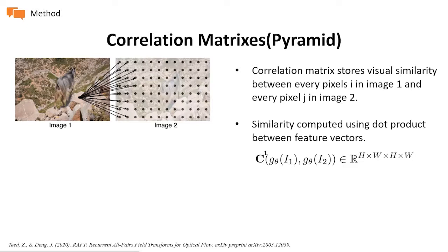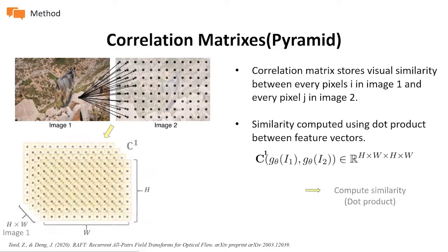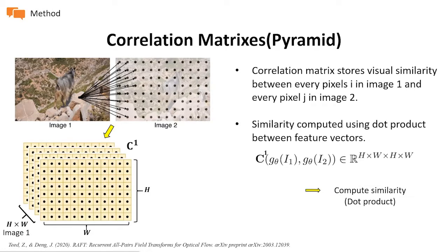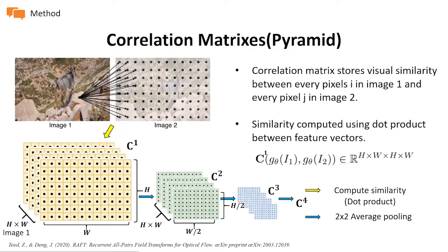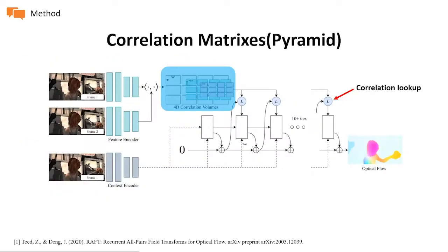The correlation matrix stores visual similarities between every pixel i in frame 1 and every pixel j in frame 2. These similarities are computed using the dot product between feature vectors. So, given feature encoder G-theta applied to frames i1 and i2, for a feature vector in G-theta(i1), we take the inner product with all feature vectors in G-theta(i2). Thus, we generate a 4D W×H by W×H volume. Each pixel in image 1 can produce a 2D response map over image 2. We then apply 2×2 average pooling three times to get a full correlation matrix at different scales. After the correlation matrix is computed, it is fixed during the rest of the iterative algorithm.